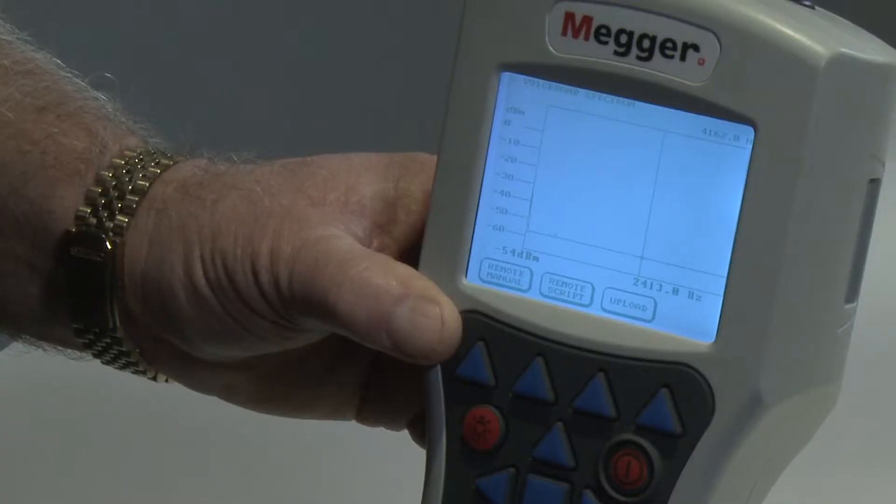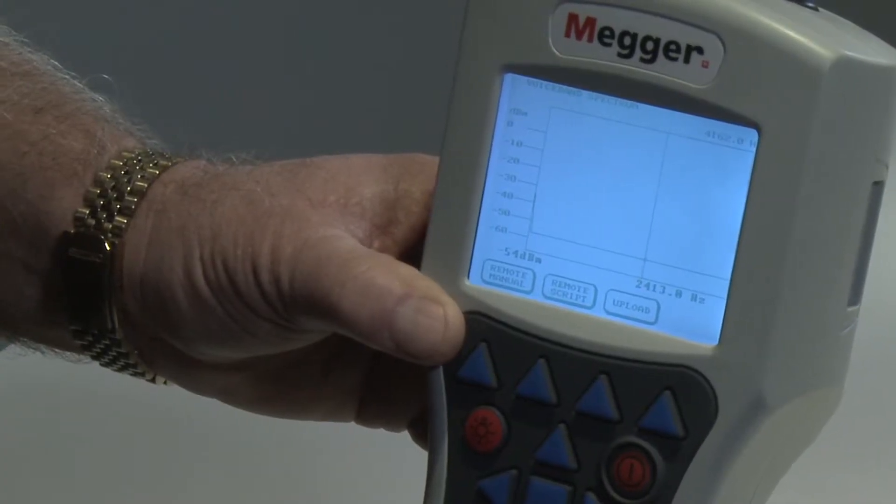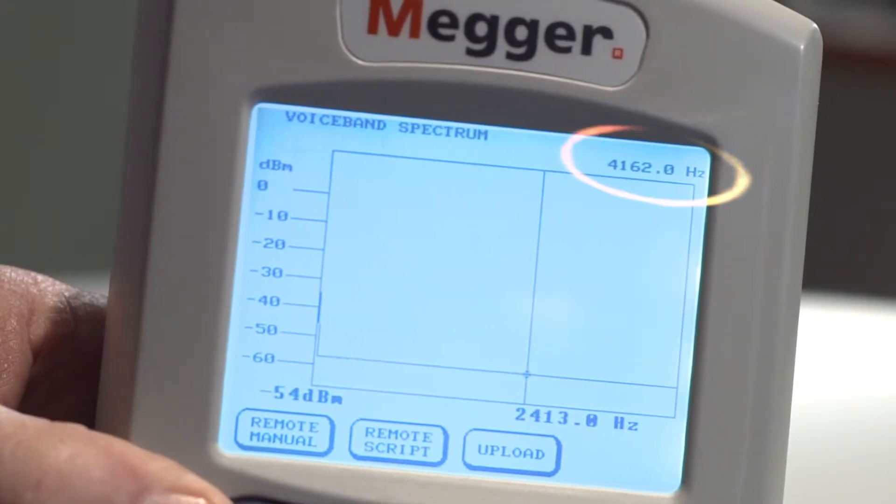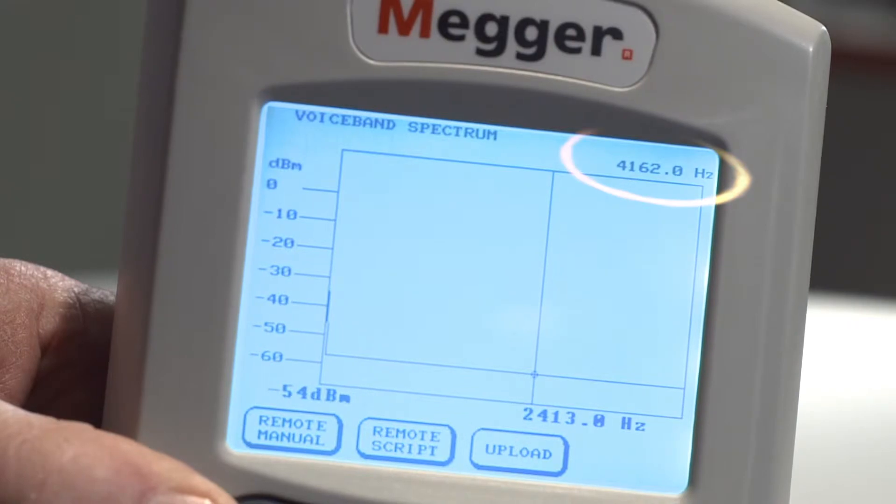The display contains the following information. Frequency Range identifies the range of frequencies viewed on the display. The VB Spectrum Analyzer measurement range is 0 to 4162 Hz.